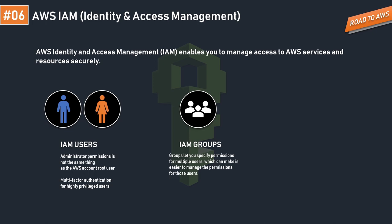The next concept is IAM groups. Think of them like WhatsApp groups: you create a group, give it a name like 'friends party,' and add users. The admin can manage users, change the group name, and control membership. Similarly, IAM groups are a collection of AWS users with similar permissions based on the policy attached to the group. For example, if you attach an S3 policy to a group, every user in that group can access S3. Groups make it easier to manage permissions for multiple users.